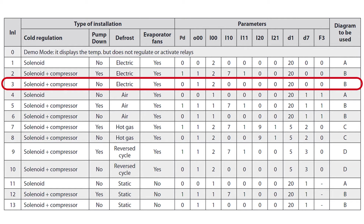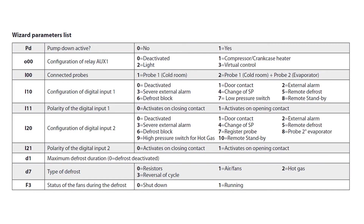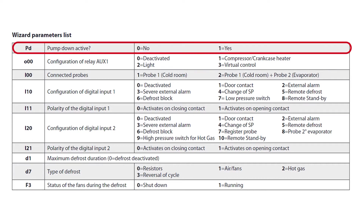Here you can see I have highlighted solenoid plus compressor. This will have electric defrost, the evaporator fans will be controlled, and to the right there is a list of parameters with various numbers beside them. Looking at the next image, we have the definitions for what all of these actually mean. Starting with PD, we see a zero, which means that the requirement for a confirmation signal — a digital input — to the controller from the low pressure control is deactivated, as the controller will not be directly controlling the compressor based on this signal.